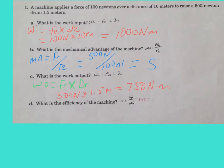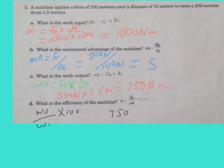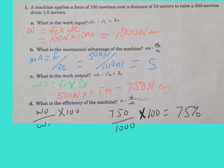Finally, we determine the efficiency of the machine. Efficiency equals work output divided by work input, multiplied by 100, and it is expressed as a percentage. Taking our work output of 750 divided by our work input of 1,000, times 100, we get an efficiency of 75%. No machine can have an efficiency greater than 100%, because you can never get more out of a machine than what you put in.